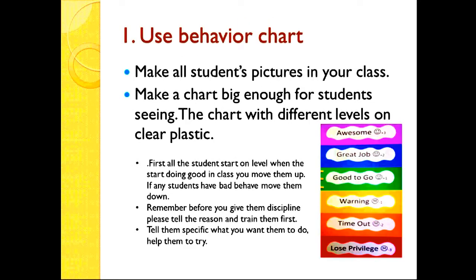Number one: use a behavior chart. You can see the behavior chart here. We have: Awesome, Great Job, Good Job, Good to Go, Warning, Time Out, and Loss of Privilege. Start from green — green means good to go. You can move up when the student does well, and move down to alert them when they do not. Make all the students' pictures in your class and make the chart big enough for students to see, with different levels clearly shown.